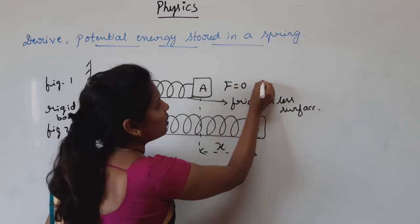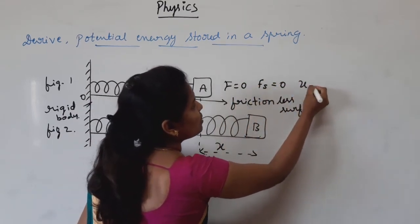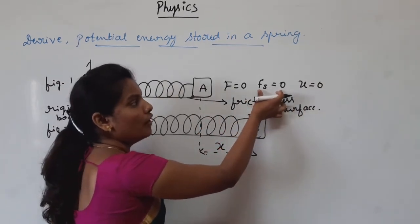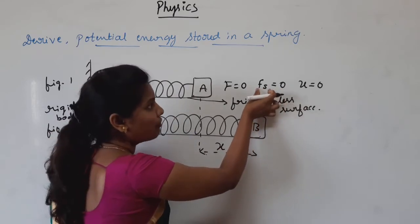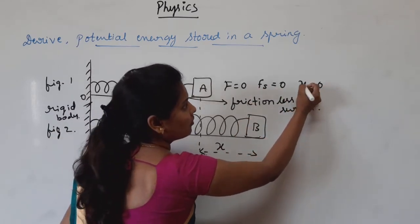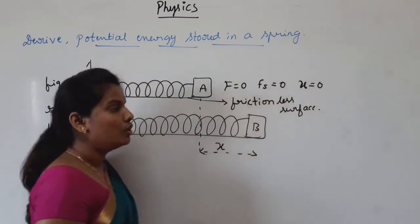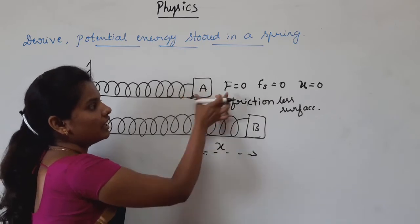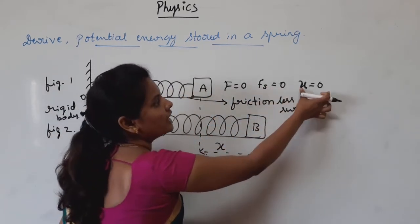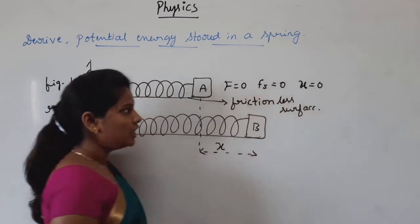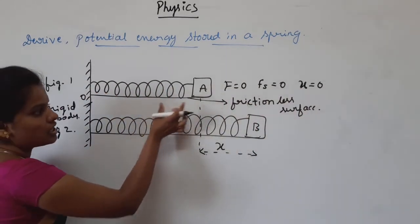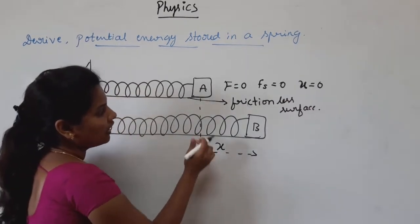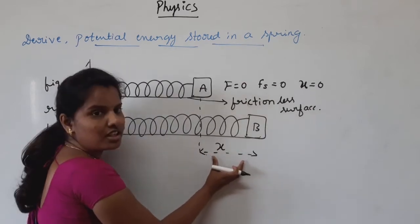In the initial state, applied force F equals zero, spring force Fs equals zero, and displacement X equals zero. When we apply some force, the spring gets stretched and displaces from A to B at a distance X.